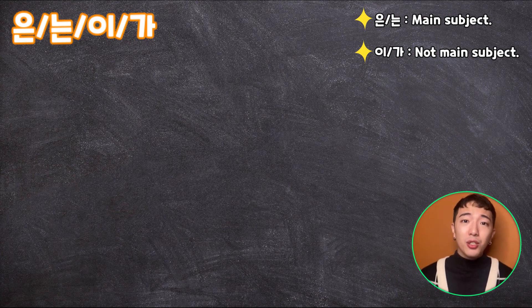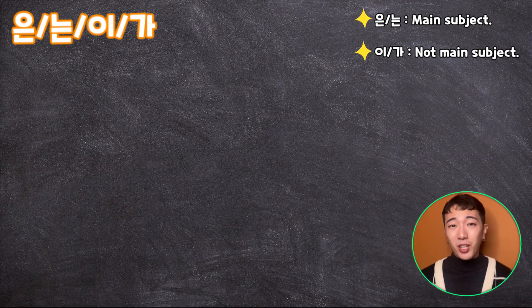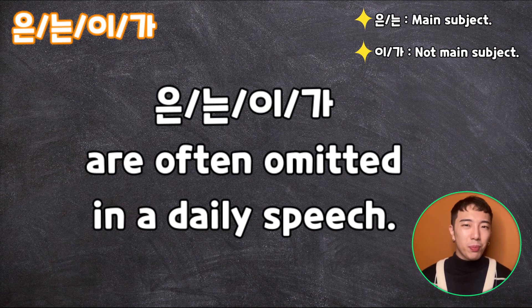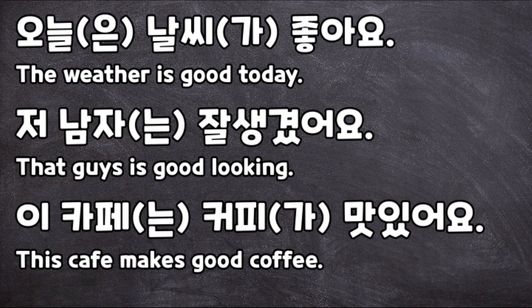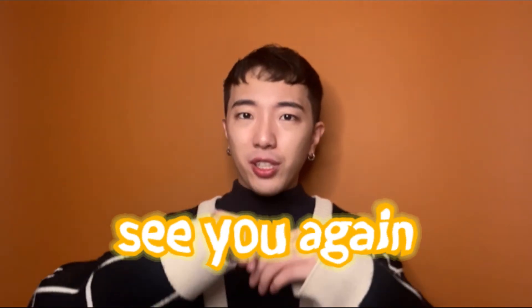Remember that I said there's a native secret? Actually, these particles are often omitted in daily speech. 오늘 날씨 좋아요 — 은 and 가 are omitted. 저 남자 잘생겼어요 — 는 is omitted. 이 카페 커피 맛있어요 — 는 and 가 are omitted. But for now, I don't recommend omitting them. Once you can feel what's right for a sentence, it's okay to omit. Thanks for watching and hope to see you again. 안녕!